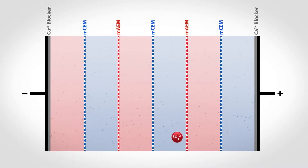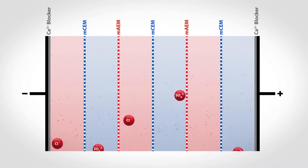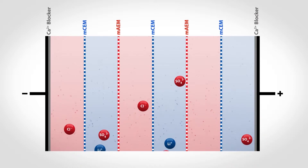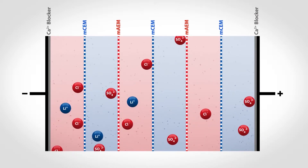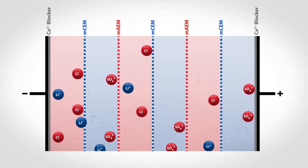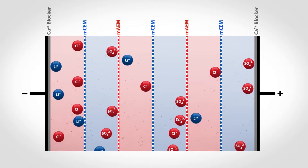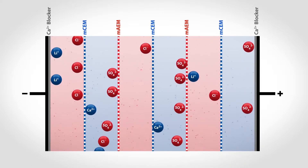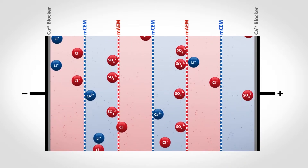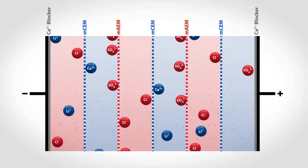Flex EDR Selective uses monovalent selective ion exchange membranes to separate ions into different streams based on their charge. As water flows through the stack, only monovalent ions like lithium and chloride pass through while the multivalent ions are blocked.